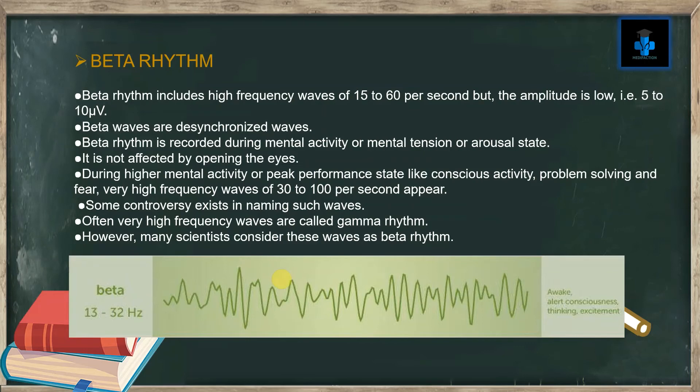Beta rhythm is not affected by opening the eyes. During higher mental activity or peak performance states like conscious activity, problem solving, and fear, very high frequency waves of 32 to 100 per second may appear. Some controversy exists in naming such waves; they are often called gamma rhythm, however many scientists consider these waves as beta rhythm only.